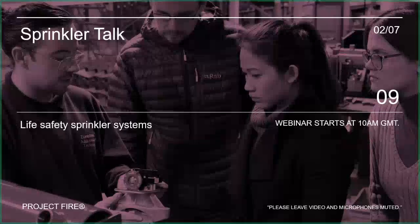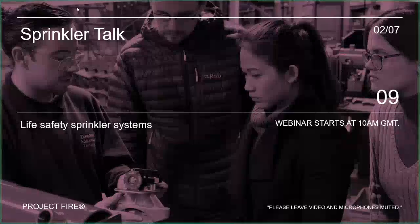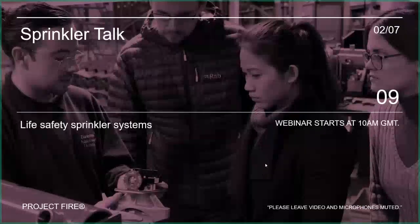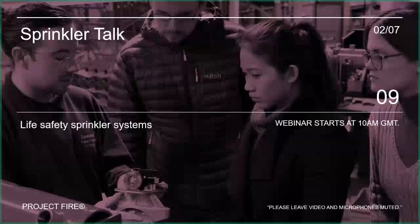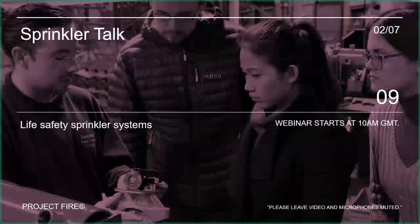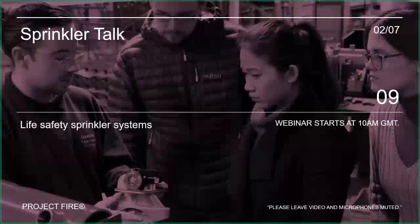Today we're going to be talking about life safety. We start at 10 o'clock, just in a couple of minutes. What did we talk about last week? Different types of sprinkler setup - we looked at wet alarm valves, dry alarm valves, pre-action, alternate systems, all those different types of sprinkler installation. Today we're looking at life safety sprinkler systems.